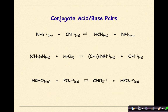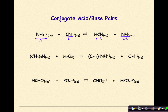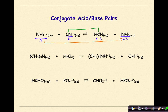Now let's do some practice identifying conjugate acid-base pairs. For each reaction, we'll identify the acid and base on the reactant side, and the conjugate acid and conjugate base on the product side. First: NH₄⁺ is our acid; CN⁻ is our base because it can gain a hydrogen. HCN is our conjugate acid because it gained a hydrogen. NH₃ is our conjugate base because it differs from NH₄⁺ by one hydrogen. So NH₄⁺ and NH₃ are a conjugate acid-base pair, and HCN and CN⁻ are another conjugate acid-base pair.